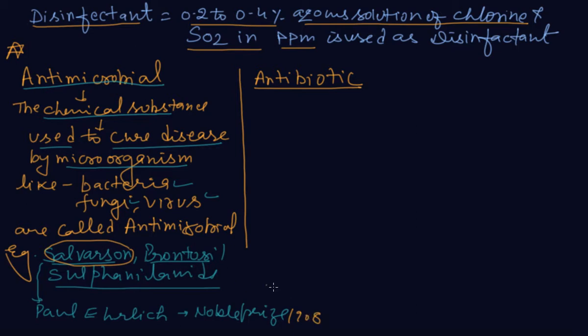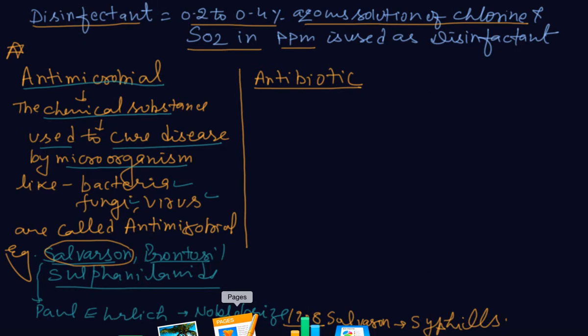Salvarsan - he got the Nobel Prize for the discovery of Salvarsan, which is used for syphilis. It is a big achievement by that scientist at that time in 1908. Now come to antibiotic.